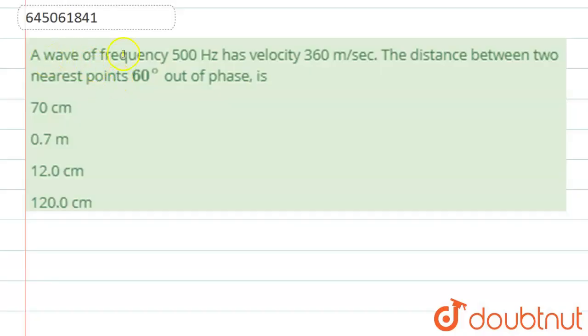Hello students, now we're going to see this question. The question says that a wave of frequency 500 Hz has a velocity of 360 m/s. The distance between two nearest points 60 degrees out of phase is...